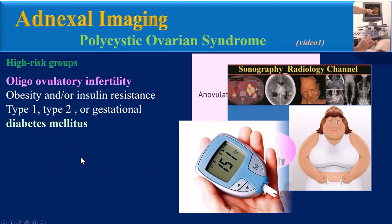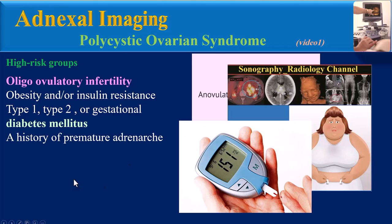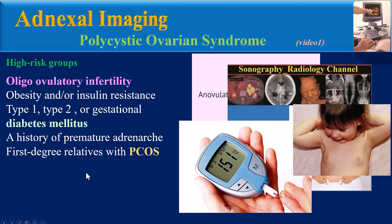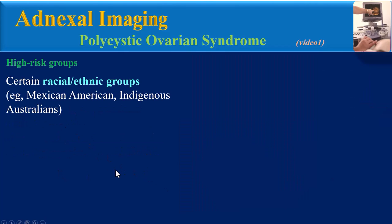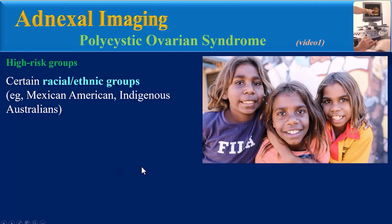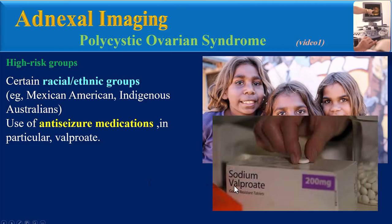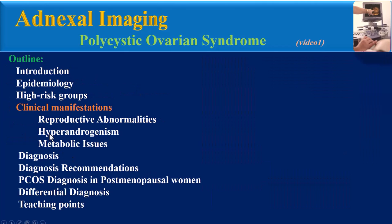High-risk groups for PCOS include women with oligo-ovulatory infertility, obesity or insulin resistance, type 1, type 2, or gestational diabetes mellitus, a history of premature adrenarche, first-degree relatives with PCOS, certain racial and ethnic groups such as Mexican American and indigenous Australians, and those using anti-seizure medications, in particular sodium valproate.